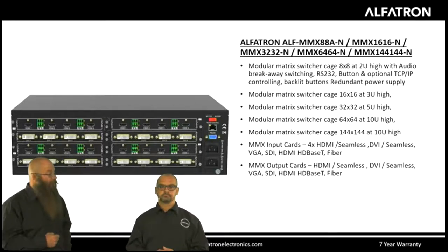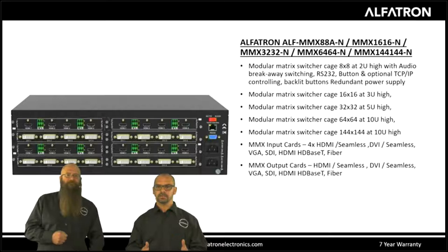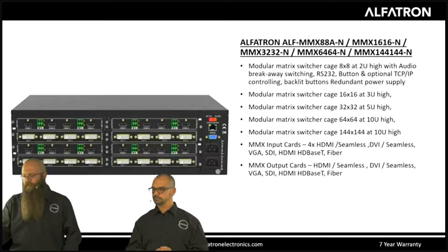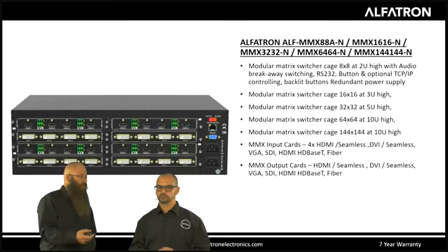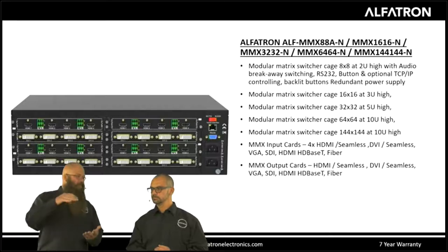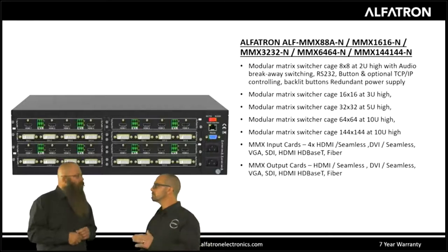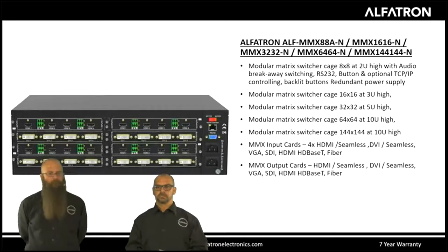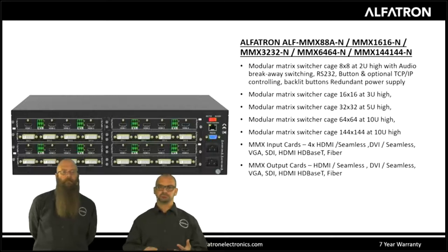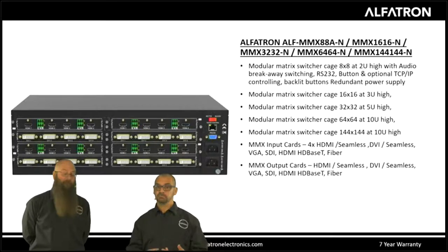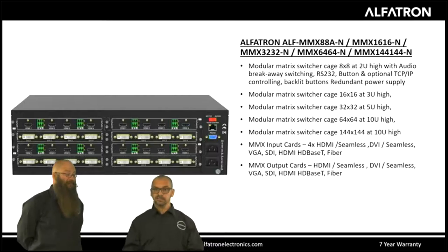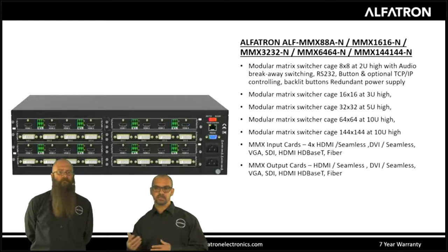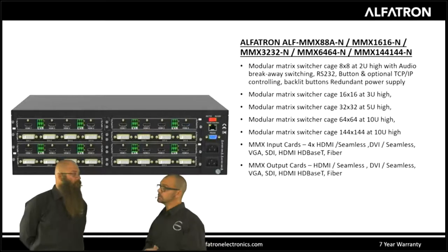The size of the rack required is displayed for each unit. The 16x16 modular matrix cage is three rack units high and the 144x144 takes 10 rack units, so you can plan accordingly without even receiving the equipment. The available output types are HDMI, DVI, VGA, SDI, HDBaseT, and fiber. There are also seamless switching options available for instantaneous switching — so you don't wait two or three seconds for your next input to come through.